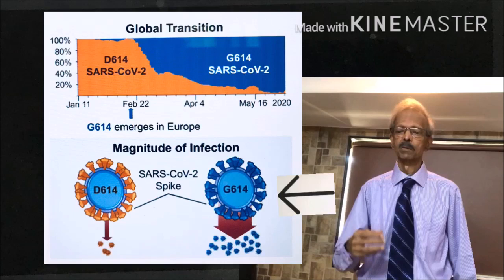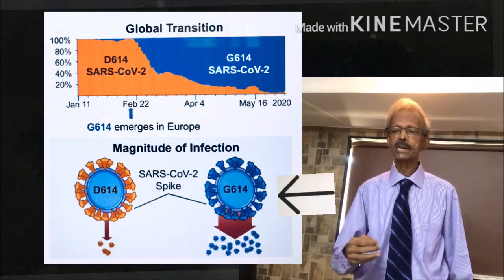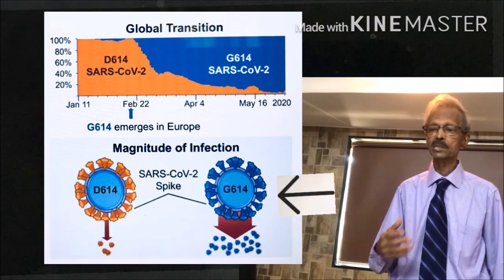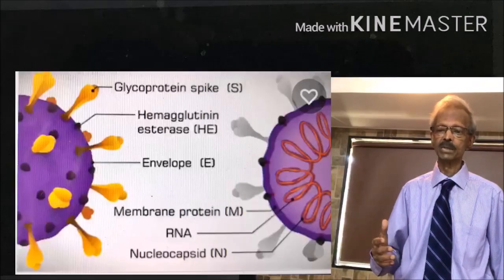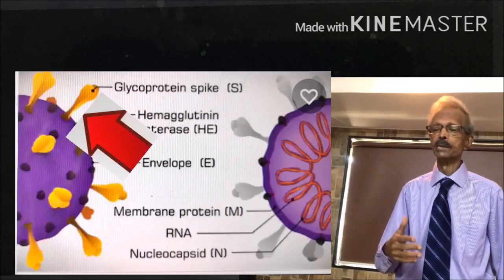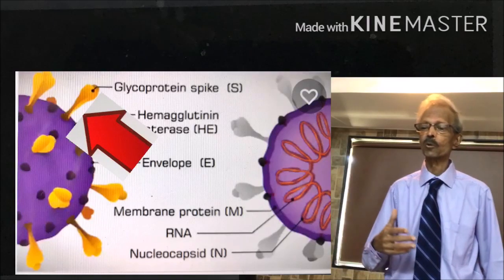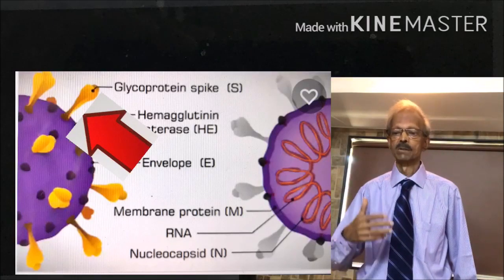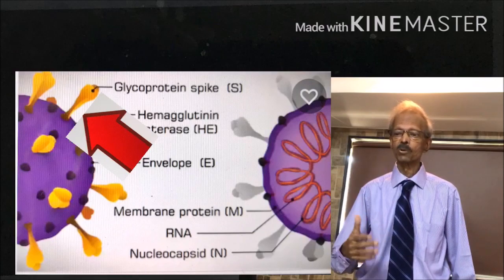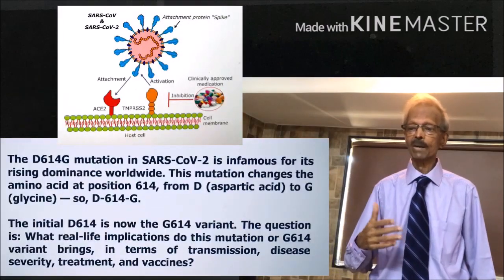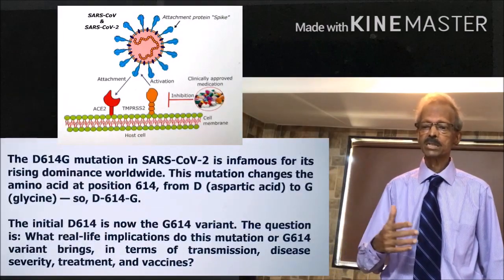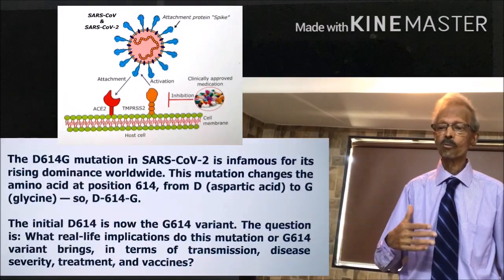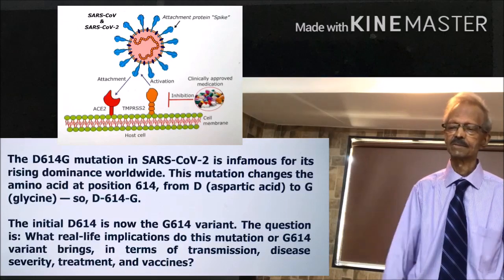There is just a small difference in their spike protein primary structure. G614 contains aspartic acid and D614 contains glycine molecule in the primary protein-specific gene.